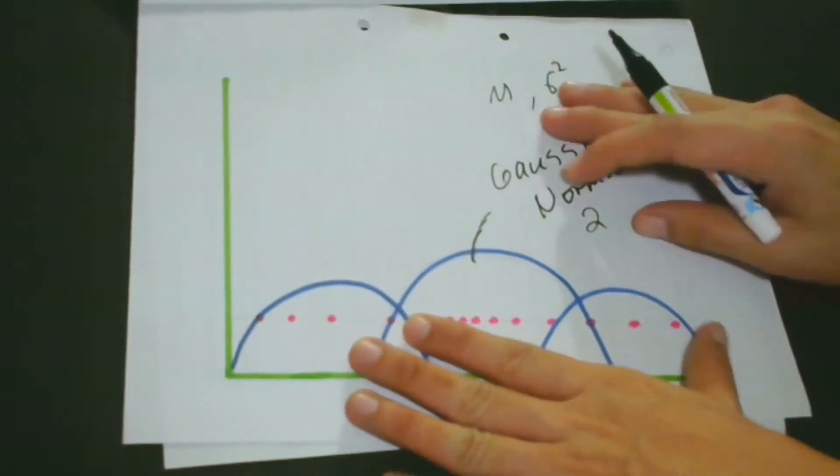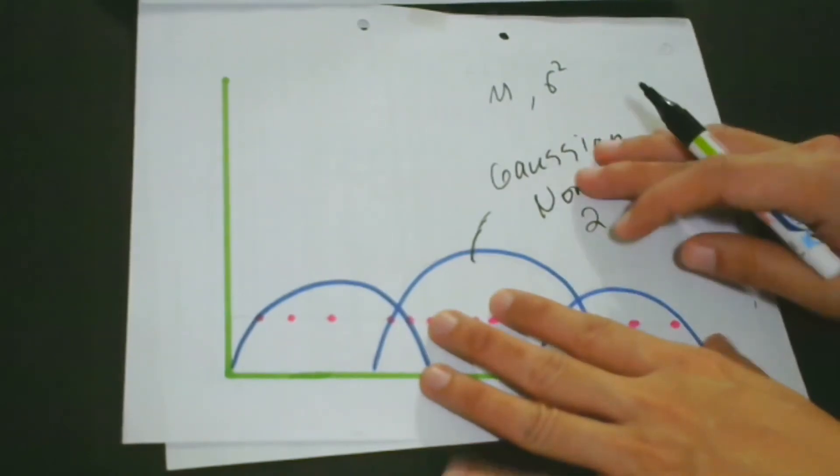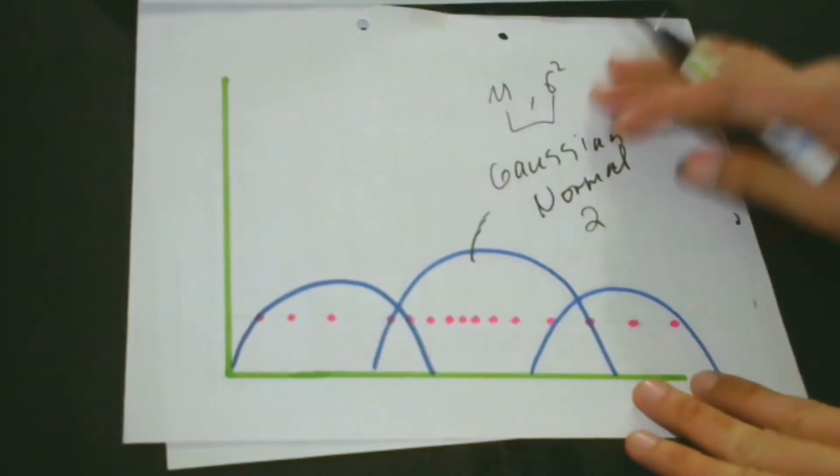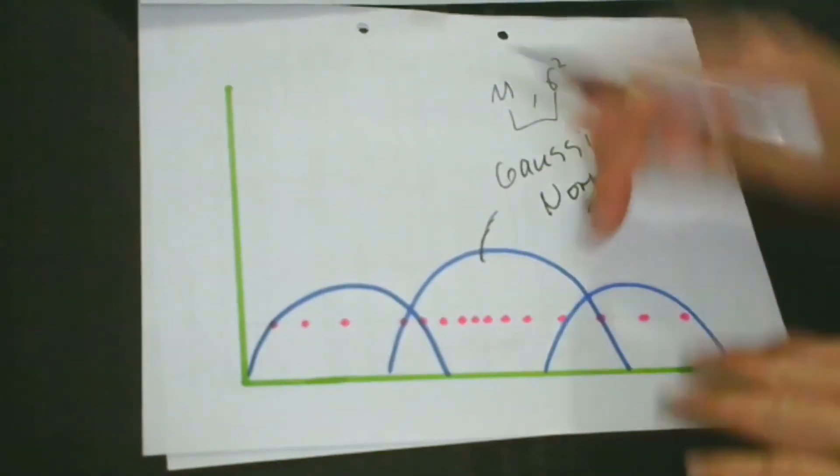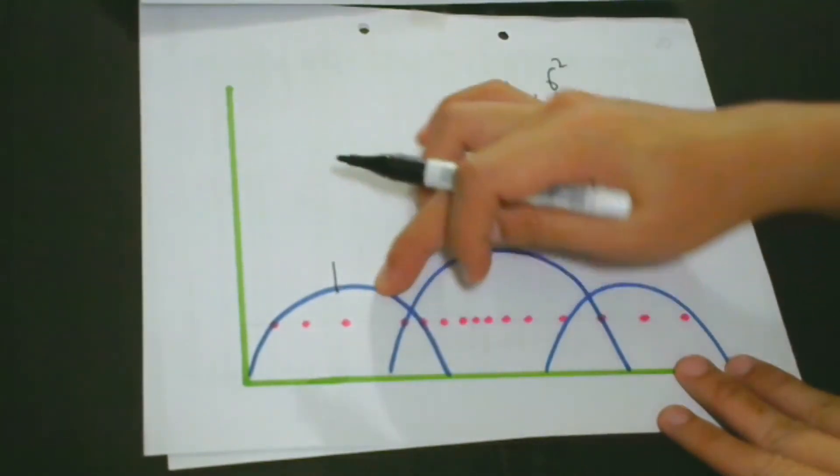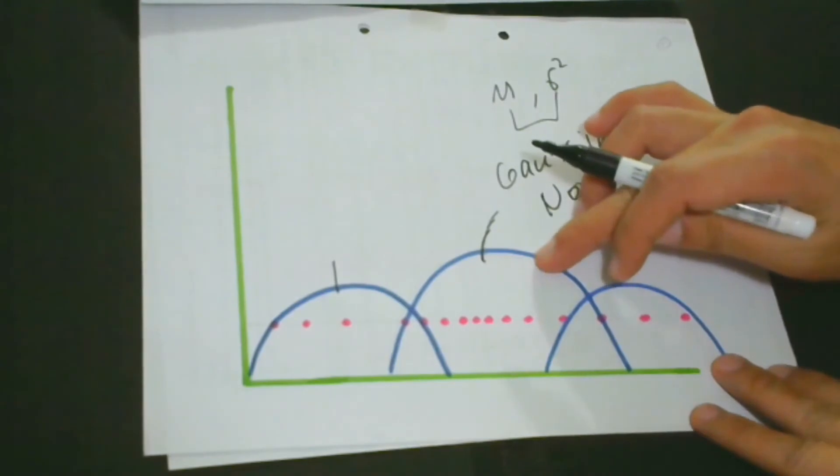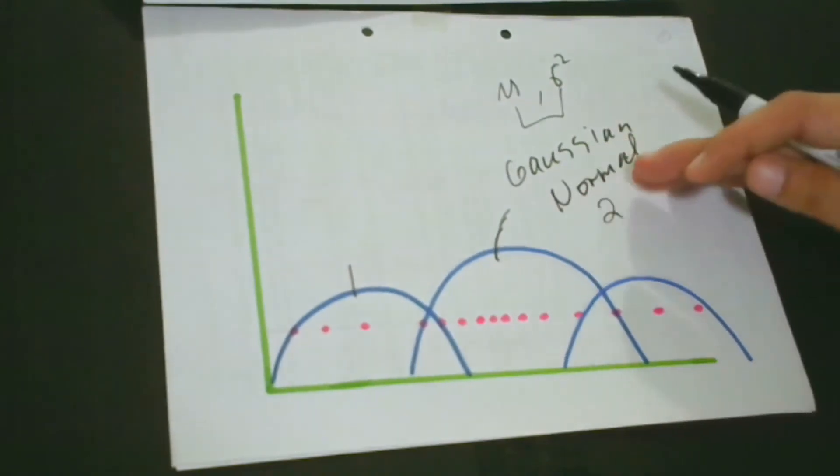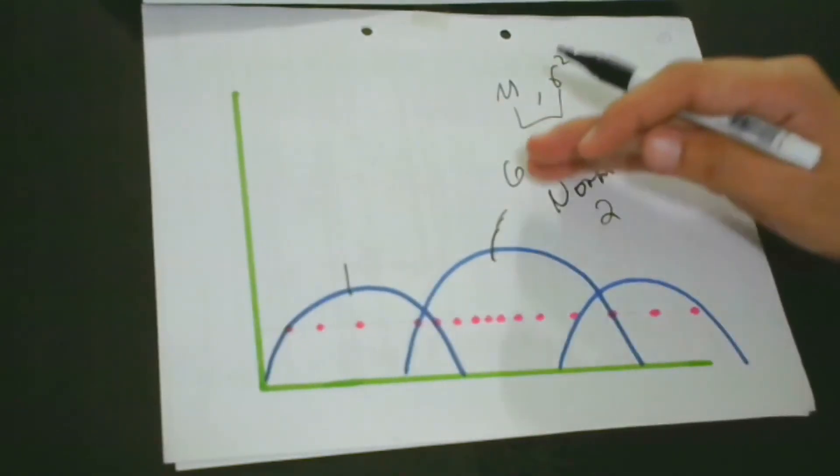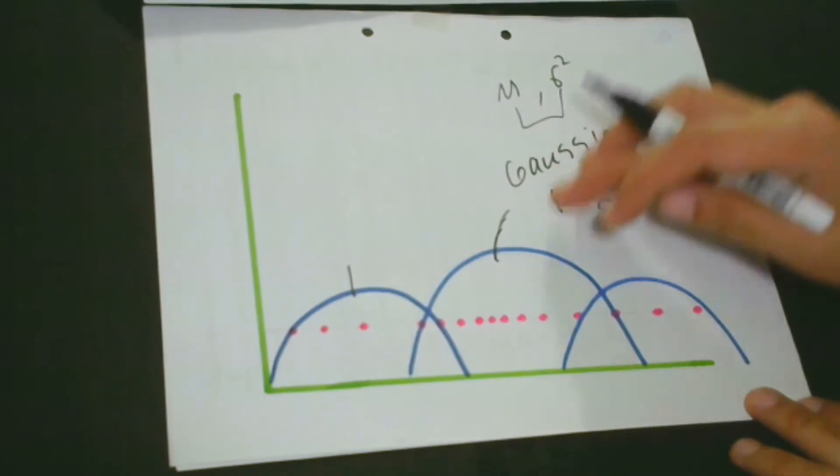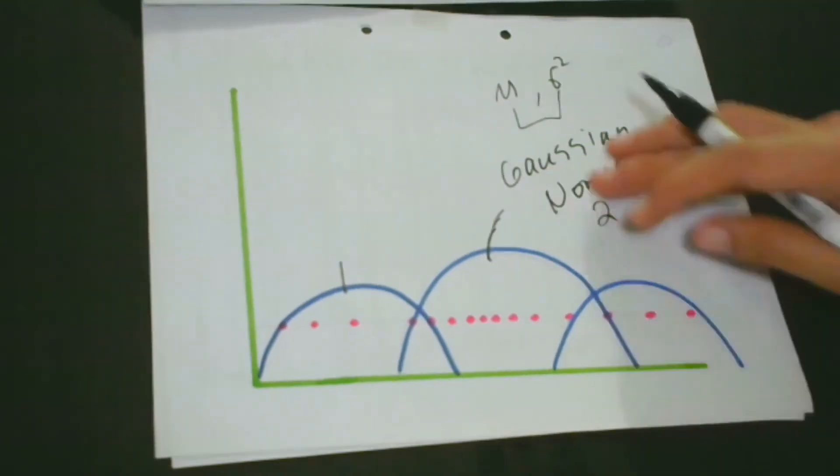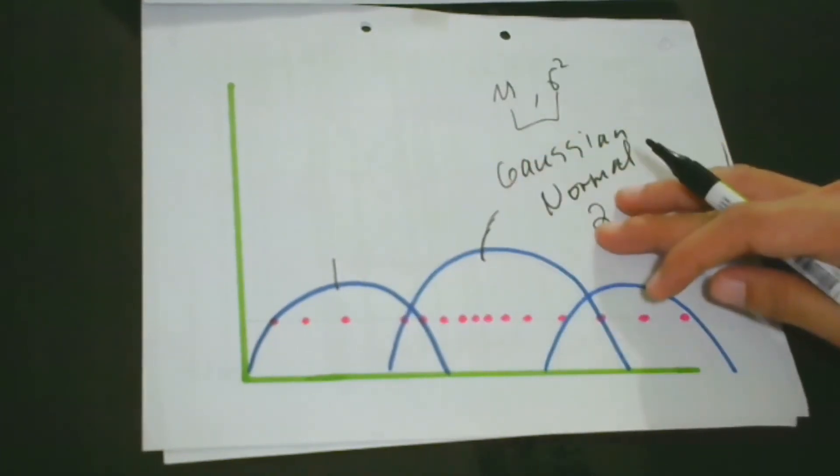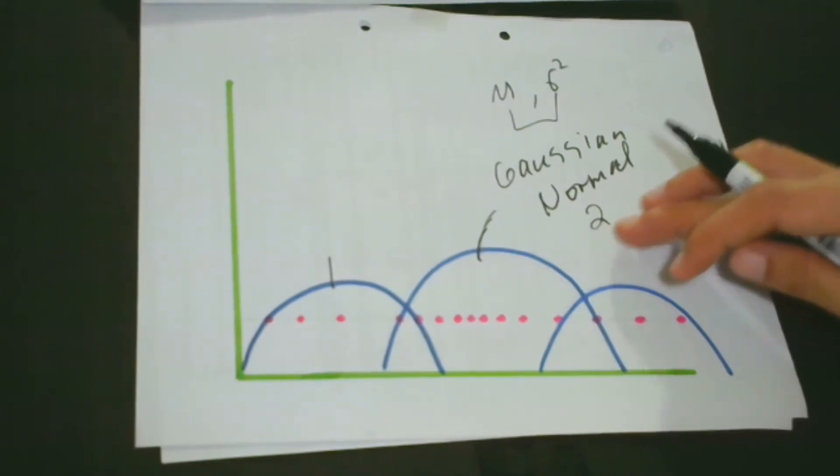Of course, I would like to mention that having different values for the mean and standard deviation would give us different shapes. This one has different mean and standard deviation. This one too has different mean and standard deviation, and also this model. As you can see, we are testing different values because we would like to see which values really represent the best data points.